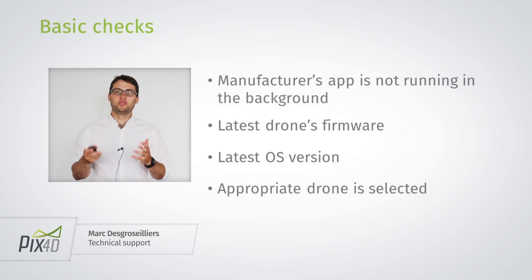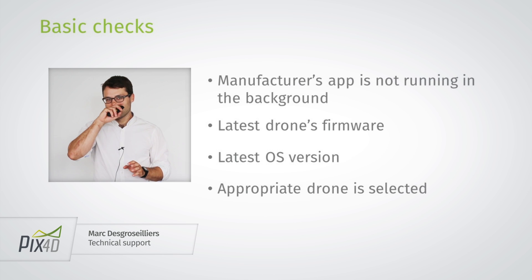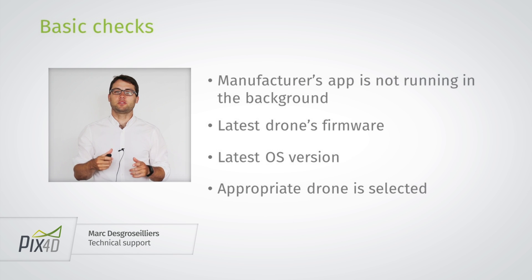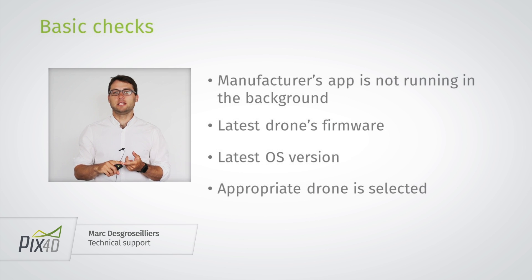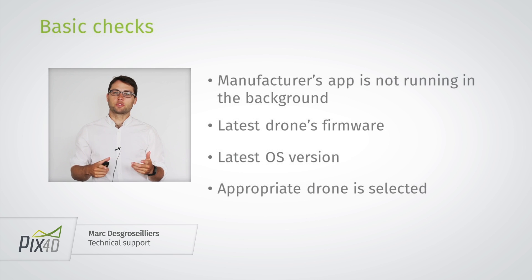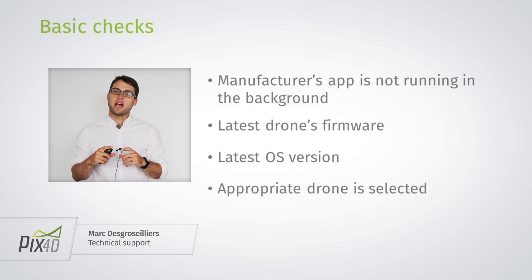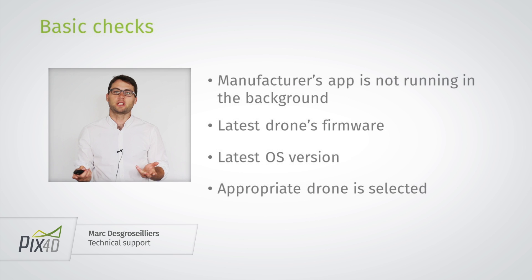I want to make a few general comments to start this video. A few things to check: you want to make sure that you have the latest firmware for your drone and the latest version of the app, whether you're using Android or iOS. Also, in the settings of the app, it's possible to choose which drone you're flying, so you really want to make sure that you've selected the appropriate drone.